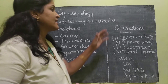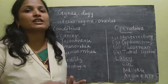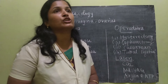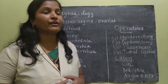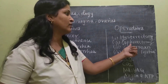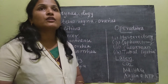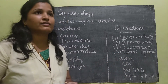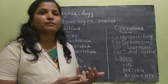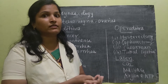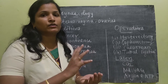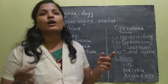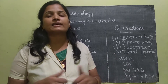The major operations performed by gynecologists are: hysterectomy — removal of the uterus; oophorectomy — removal of ovaries; cesarean section — birth of a child by surgery; and tubal ligation — cutting the path between the ovaries and the uterus.